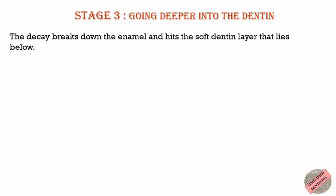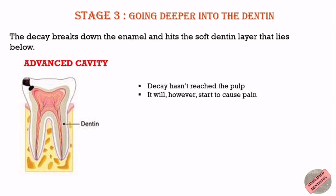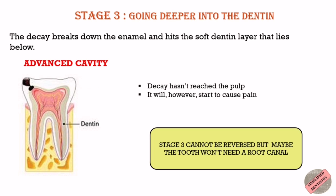Stage 3 is going deeper into the dentine. The decay breaks down the enamel and hits the soft dentine layer that lies below. This is an advanced cavity. The decay hasn't yet reached the pulp, but it will start to cause pain. Stage 3 cannot be reversed, but maybe the tooth won't need a root canal.